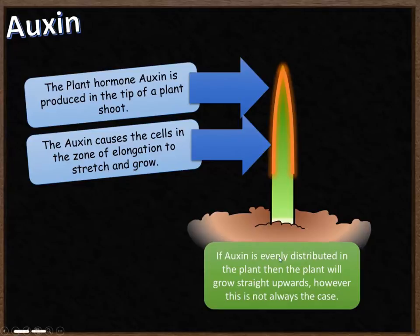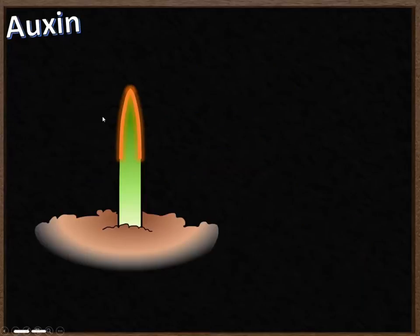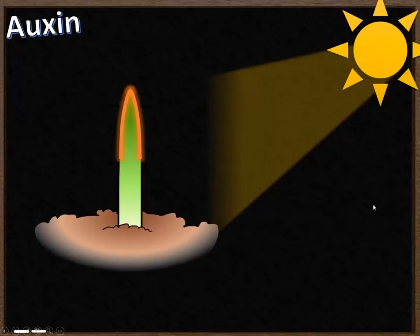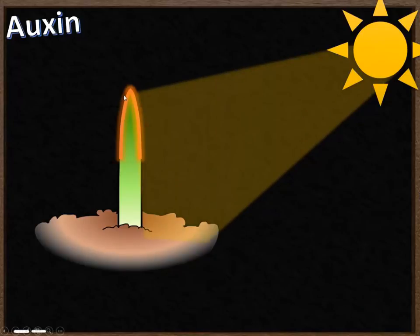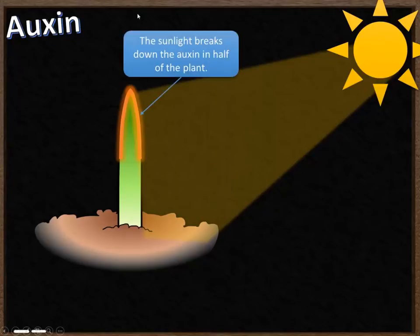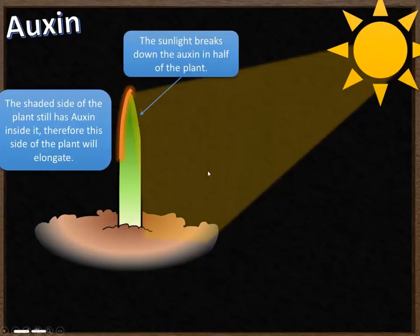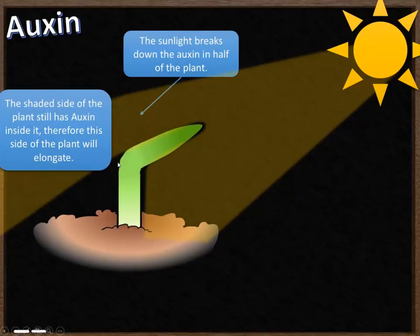However, it's not always the case that auxin is evenly distributed down both sides of the plant shoot. If we introduce sunlight shining on just one side of the plant — so the other side is in shade — we notice that sunlight breaks down the auxin on the lit side, so that auxin is no longer present there. The shaded side still has auxin, therefore that side will elongate whereas the other side in sunlight won't. That causes the plant shoot to bend towards the sunlight, as these cells elongate and stretch out while the others don't.